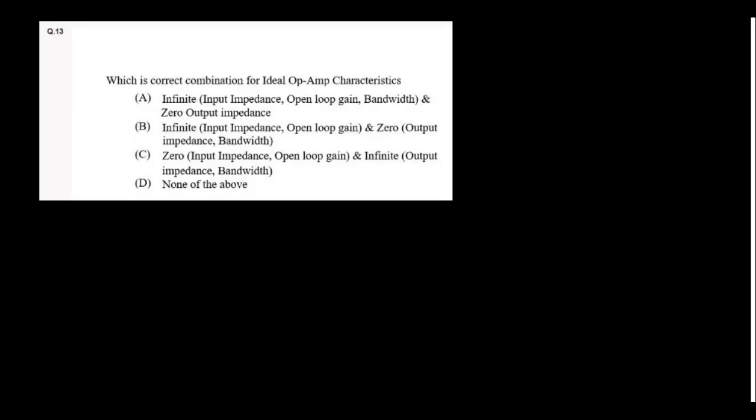Which is the correct combination for ideal op-amp? Ideal op-amp should have infinite input impedance, infinite open loop gain bandwidth, and zero output impedance. Option A is the right answer. Sequence of steps for conversion of analog signals to digital: first you have to sample it, then you have to quantize it—quantizing means the levels you have to decide—then you have to encode it. So option A.